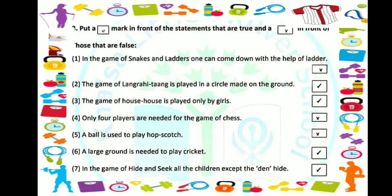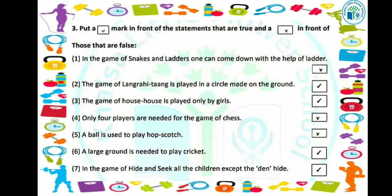Now kids, our next topic is 'True or False.' The first statement: in the game of snakes and ladders, one can come down with the help of a ladder. In snake and ladder, do we come down with the help of a ladder? No, this sentence is false. If a snake comes in the way, we go down because of the snake. With a ladder, we go straight up. So this sentence is false.